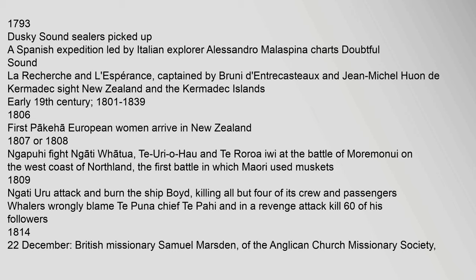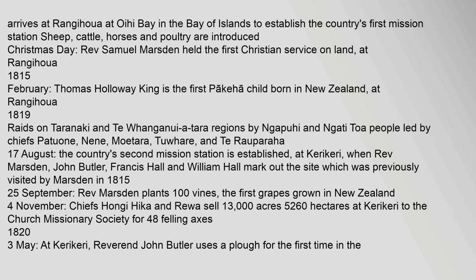1814, 22 December: British missionary Samuel Marsden of the Anglican Church Missionary Society arrives at Rangihoua at Oihi Bay in the Bay of Islands to establish the country's first mission station. Sheep, cattle, horses and poultry are introduced. Christmas Day: Rev. Samuel Marsden held the first Christian service on land at Rangihoua.